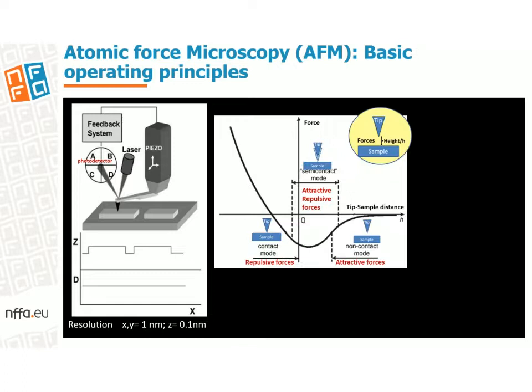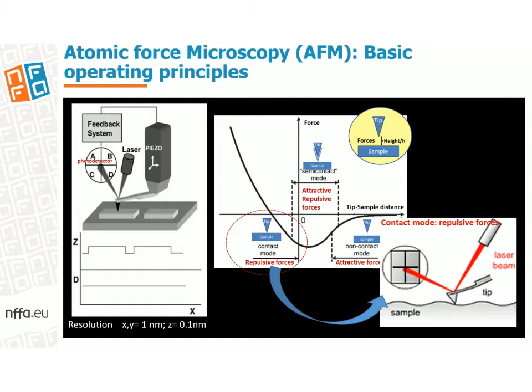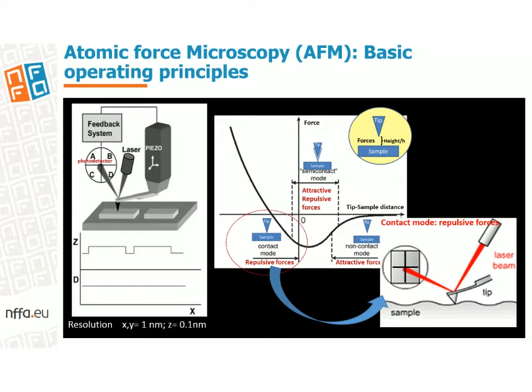Atomic force microscopy was born as a natural desire to extend STM capabilities to non-conducting materials. AFM relies on the use of a tip mounted on a cantilever which is brought into close proximity to a surface, where intermolecular forces acting between tip and sample cause the cantilever to bend. The tip-sample forces are tracked by the deflection of a laser beam focused on the cantilever, which is collected by a photodetector reproducing the sample topography. This technique can also achieve very good spatial resolution and resolve interaction forces with pico-Newton sensitivity in a wide range of environments. The type of interaction force, attractive or repulsive, depends on the tip-sample distance as shown in the slide.